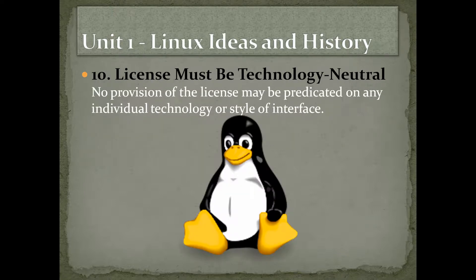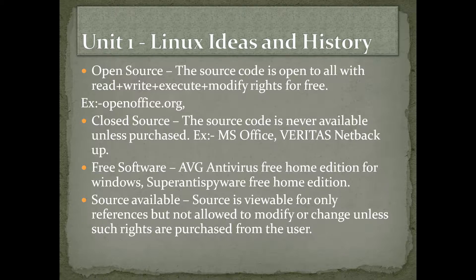Tenth: license must be technology neutral. No provision of the license may be predicated on any individual technology or style of interface. Open source means the source code is open to all with read, write, execute, and modify rights, for free. Closed source means the source code is not available to all with any read, write, execute, or modify rights. Examples of closed source are Microsoft Office, Veritas, and NetBackup software.